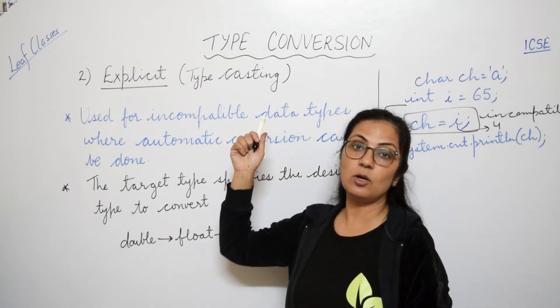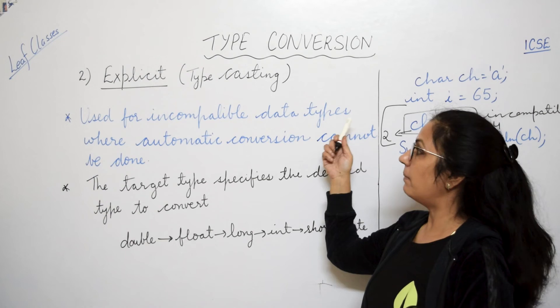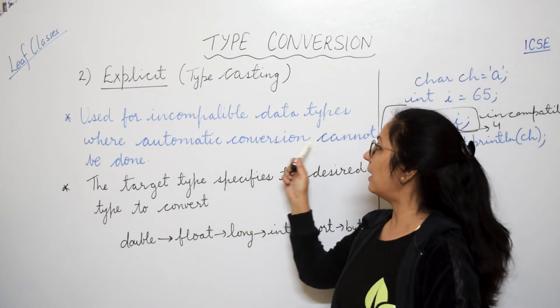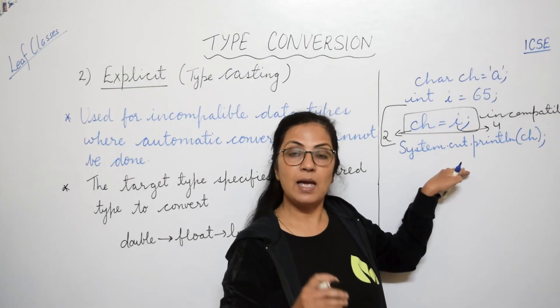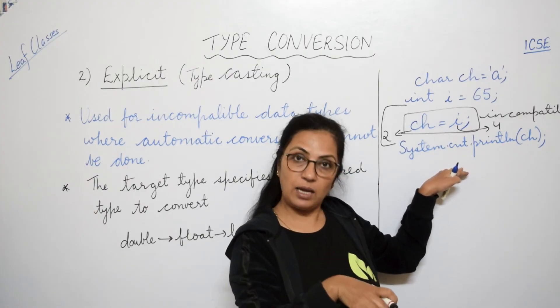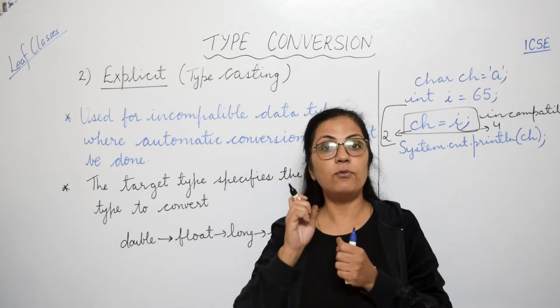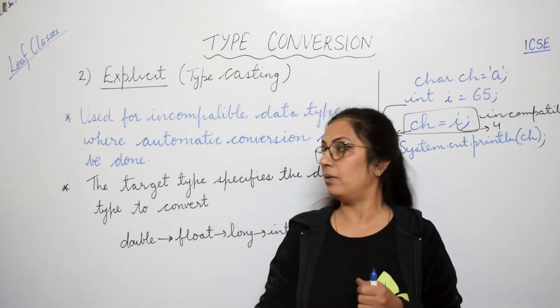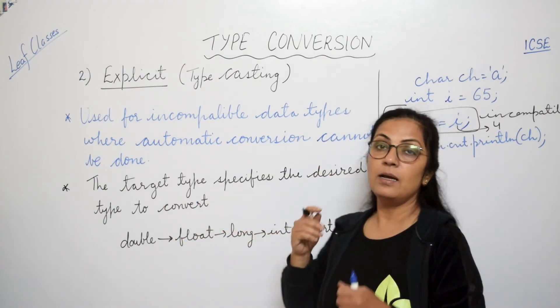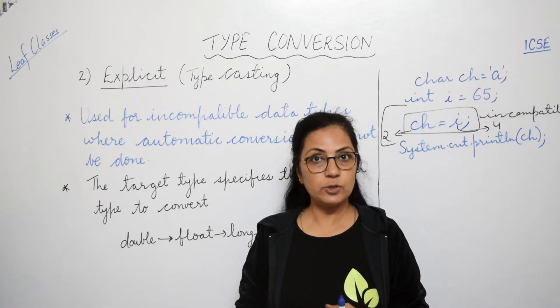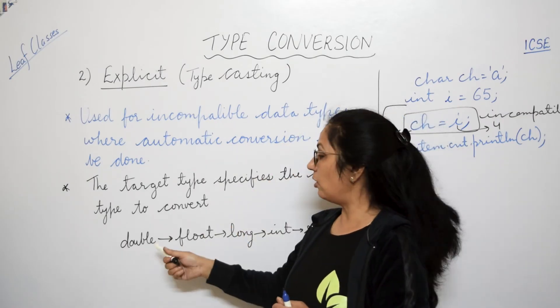Explicit conversion, jisko hum typecasting bhi bolte hain, it is used for incompatible data types where automatic conversion cannot be done. Jaise yaha par automatic conversion possible nahi hai. Int char mein convert nahi ho pa raha hai. Toh uske liye humko kya karna padega? We have to forcefully do that conversion.